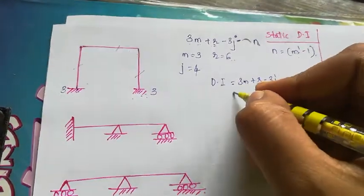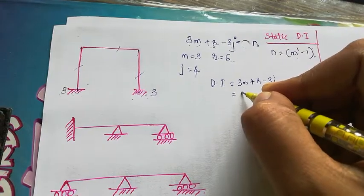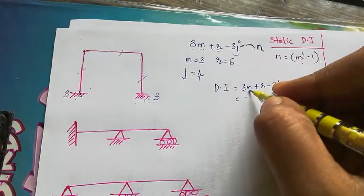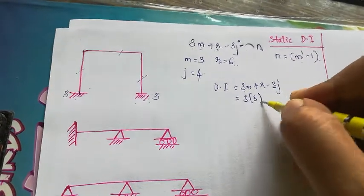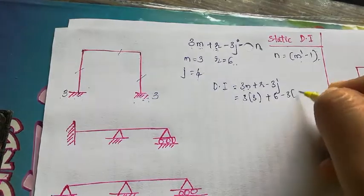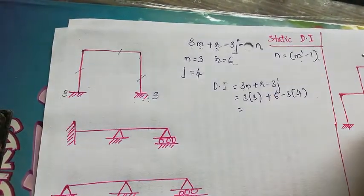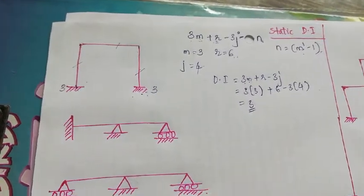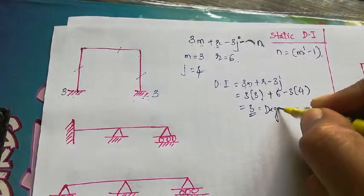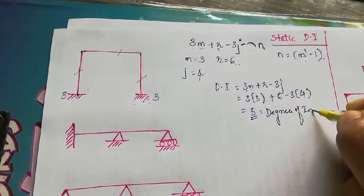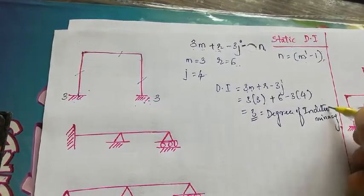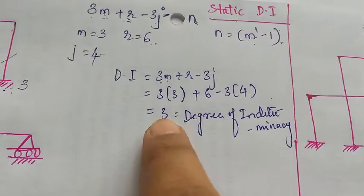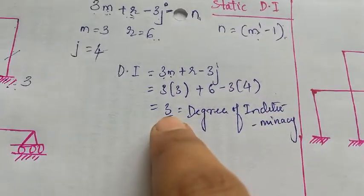So the degree of indeterminacy = 3m + r - 3j = 3(3) + 6 - 3(4) = 9 + 6 - 12 = 3. The degree of indeterminacy is 3.